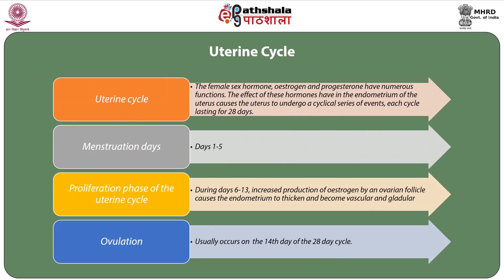The uterine cycle is driven by estrogen and progesterone. These hormones cause the uterus to undergo a cyclical series of events known as the uterine cycle, which lasts 28 days. Menstruation occurs from days 1 to 5. During days 6 to 13, increased production of estrogen by an ovarian follicle causes the endometrium to thicken and become vascular and glandular — this is called the proliferation phase. Ovulation usually occurs on the 14th day of a 28-day cycle.